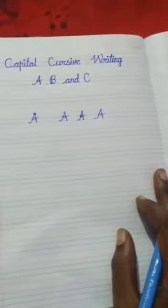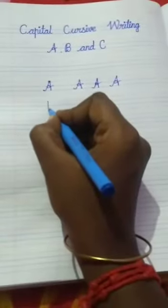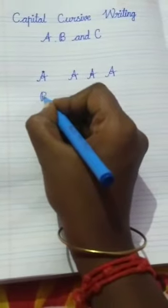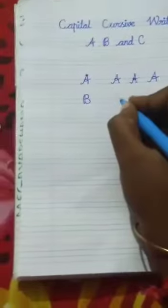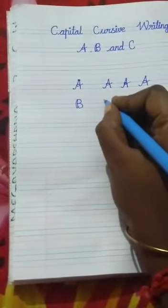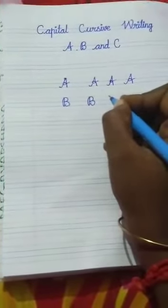Let us learn to write capital B. Draw a standing line and curve. Again one curve. What letter is this? Capital B.